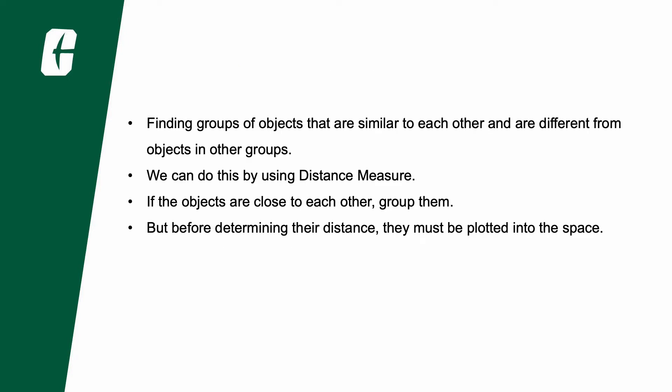Now let's see how we can do this. We follow the basic steps shown here. First we find groups of objects that are similar to each other and are different from objects in other groups. We calculate this using a distance measure which means we determine how far any two objects from the same group are from other objects within the group.